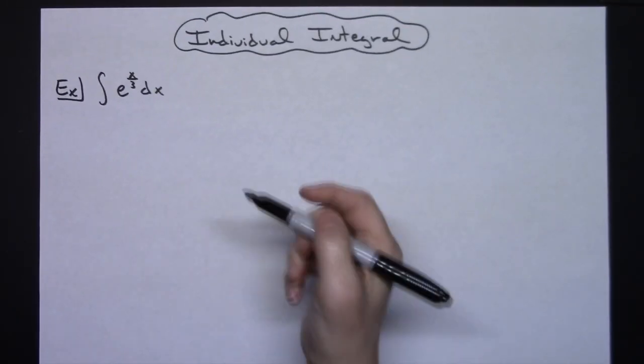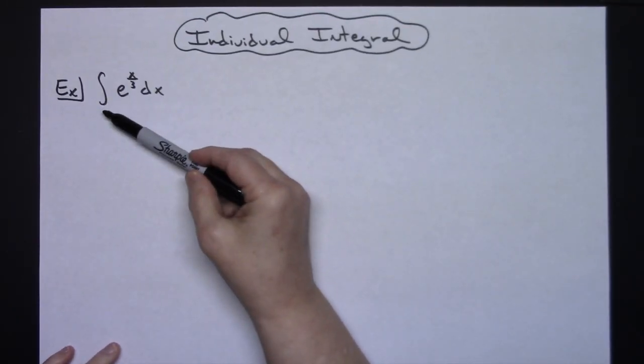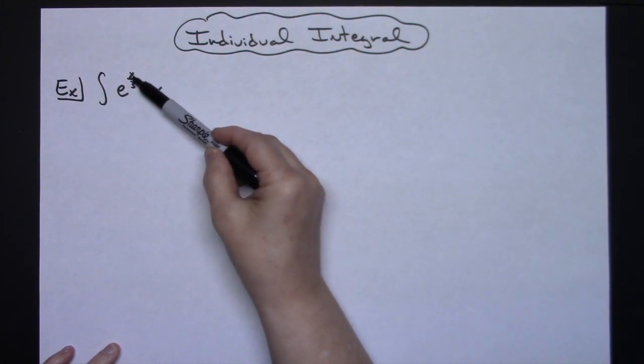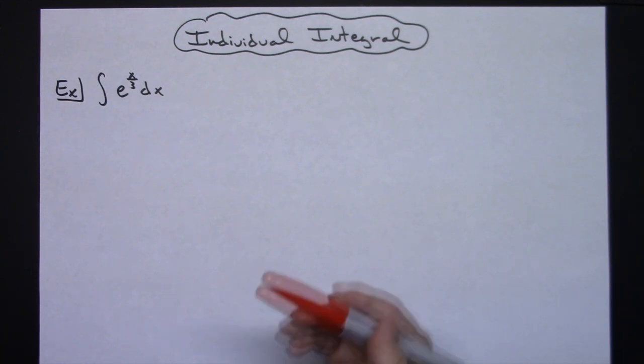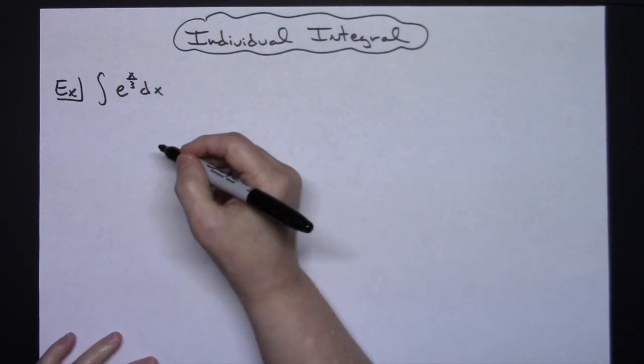In this video I'm going to work out just one individual integral. We're going to take a look at the integral of e raised to the x over 3 dx. This is going to be a straight u-substitution integral, one that would have been shown or used very early on in calculus as soon as you started learning that u-substitution method.